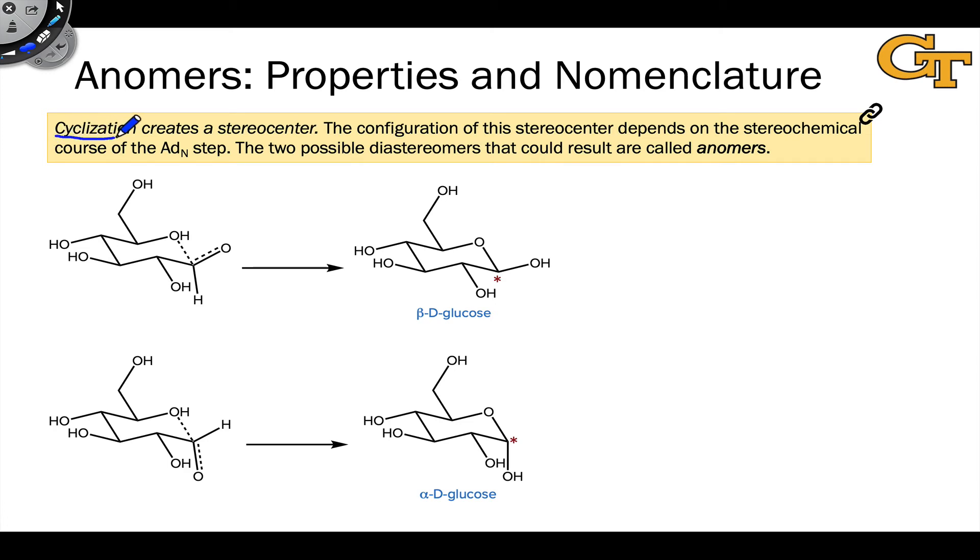The cyclization of the open-chain form of a monosaccharide creates a stereocenter at the anomeric carbon. The configuration of this stereocenter depends on how the hydroxyl group adds to the carbonyl group from one face or the other.